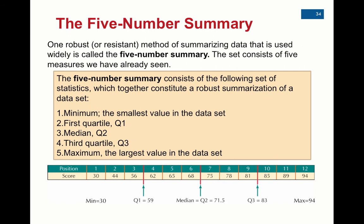Here's an example data set of 12 numbers showing the 5-Number Summary below it, the minimum of 30, the maximum of 94, and the quartiles of 59, 71.5, and 83 in the middle. Remember, the median is the second quartile, or the 50th percentile.